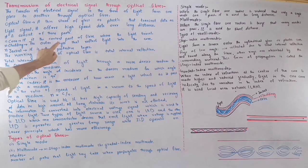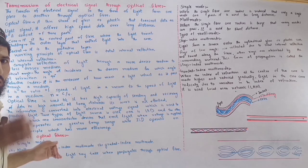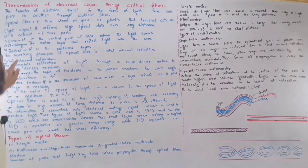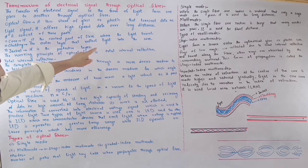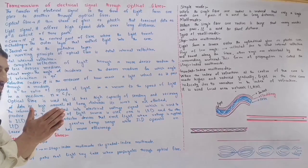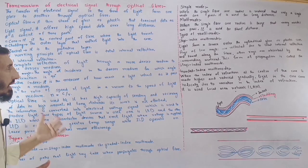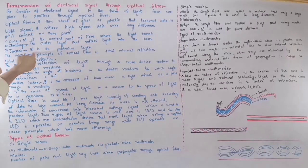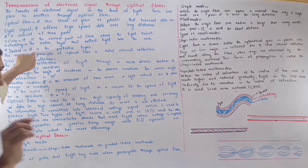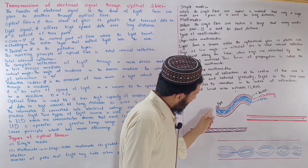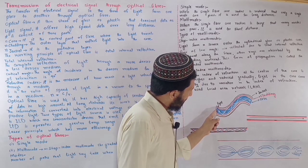The core is the central part of the fiber where the light travels. The cladding is the outer layer that reflects light back into the core, keeping the light signal within the fiber.